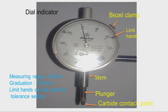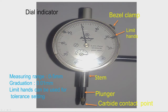First, let us discuss about dial indicators. This figure shows a commonly used dial indicator. We can see the various parts: the bezel and bezel lock, and the dial. There is a bigger dial and a smaller dial. The resolution of this dial is 0.01 millimeter, and for each revolution of the big pointer, the small pointer moves by 1 graduation.